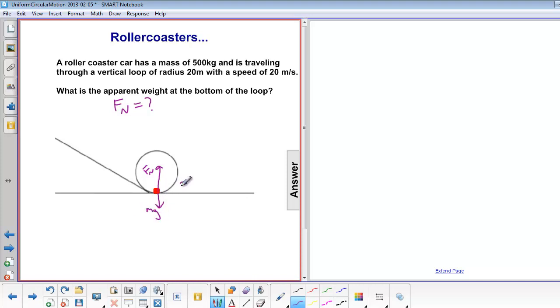That's because our acceleration is towards the center of the circle, which is up. Start with our sigma f equals ma. Our sigma f is normal force minus mg equals m, and a is equal to v squared over r.